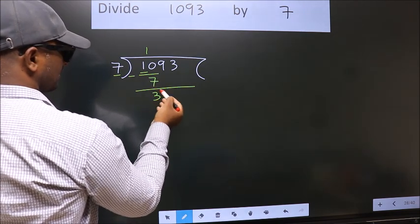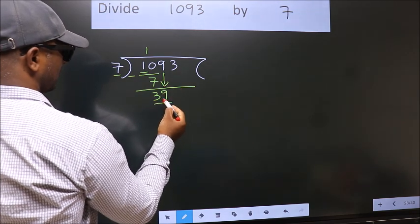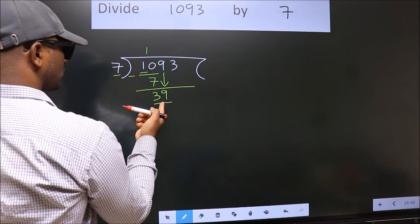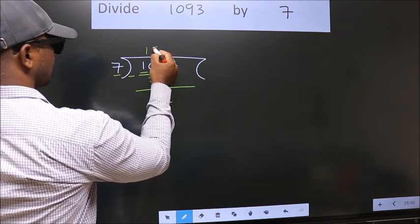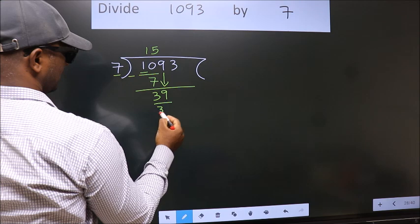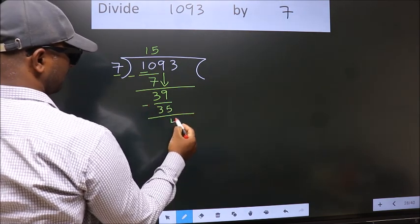After this, bring down the beside number. So 9 down. So 39. A number close to 39 in 7 table is 7 fives, 35. Now we subtract. We get 4.